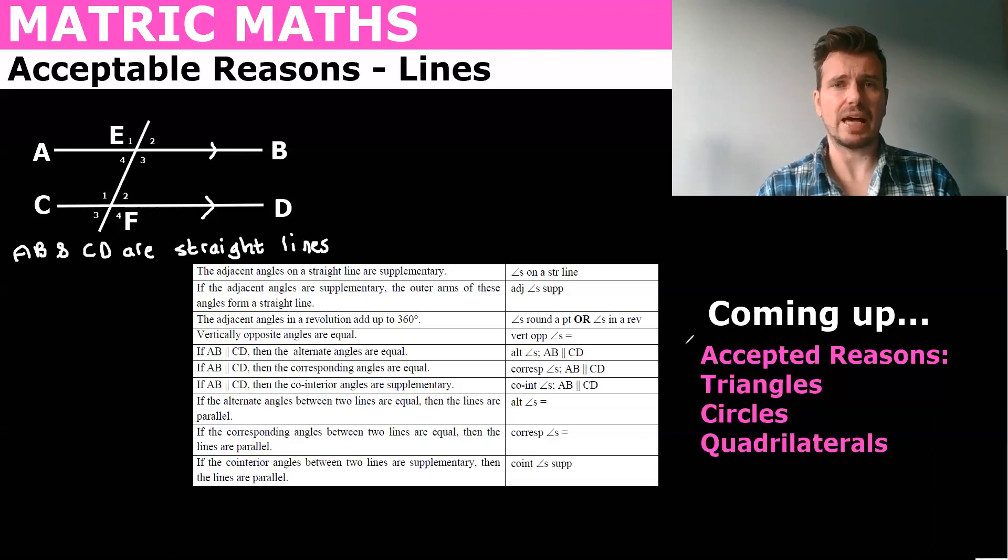So let's start with angles on a straight line. So what I've drawn is this diagram and you're given that AB and CD are straight lines and you're also given that they are parallel. And they've labeled the angles E1, 2, 3 and 4 and F1, 2, 3 and 4. And let's look at the first one.